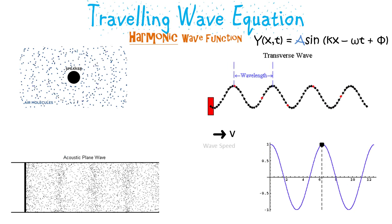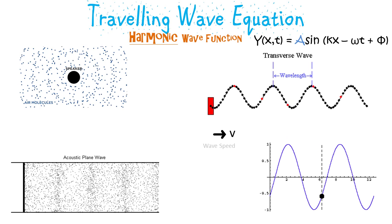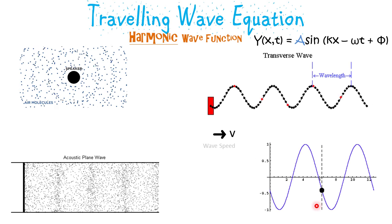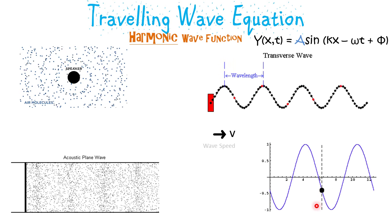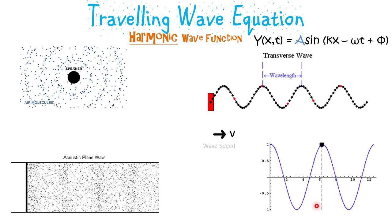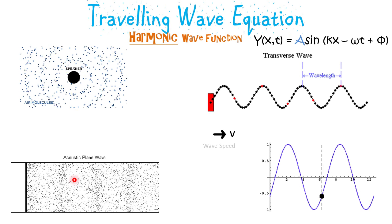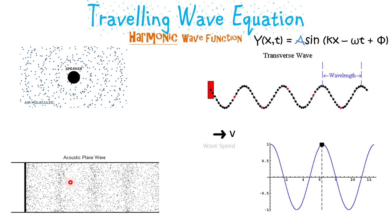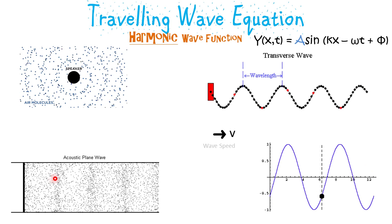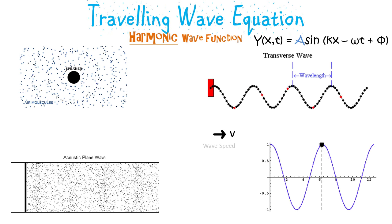Here are some great visuals on traveling waves. We see that the particles in the medium don't move in the forward direction — the particles oscillate about a mean position and the energy is transmitted in the forward direction. Sound waves are an example of a transverse wave where the particles oscillate in to-and-fro motion about their mean position as the sound is transmitted in the forward direction.